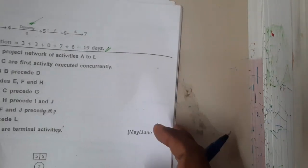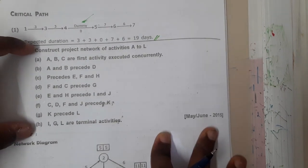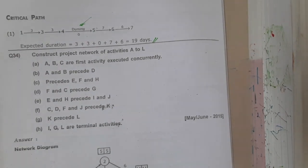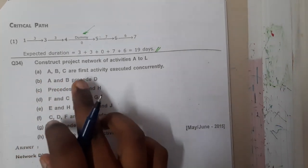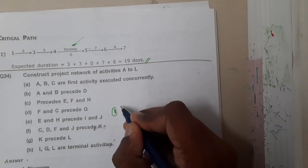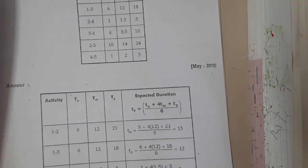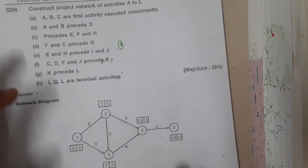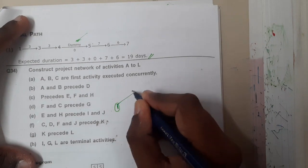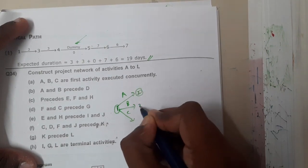Let us continue with the next problem. Here he did not give a diagram but gave statements. He specified activities A, B, C, D, E, F, G, H. He said A, B, and C are first activities executed concurrently, meaning from one starting point all three can execute simultaneously. However, I think the problem and the given solution might be mismatched, so let us draw the diagram ourselves for clarity.